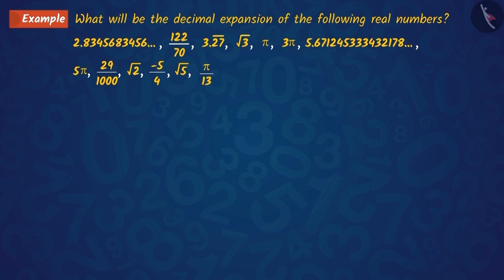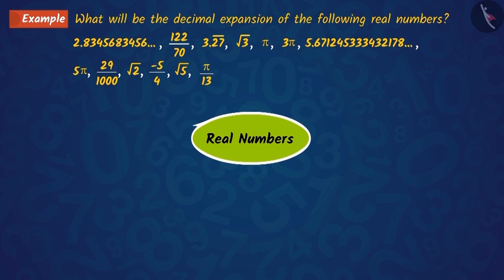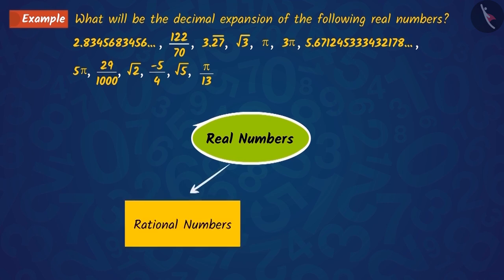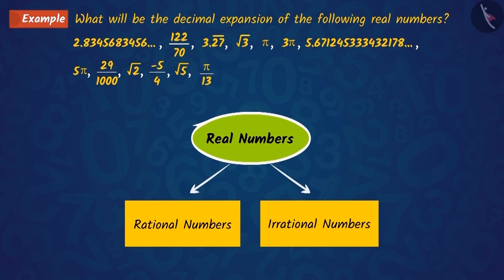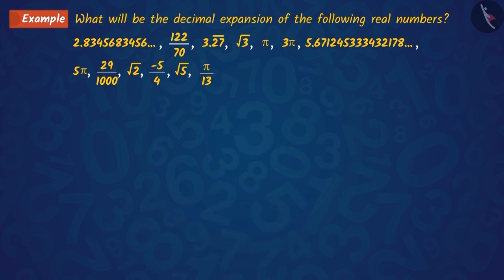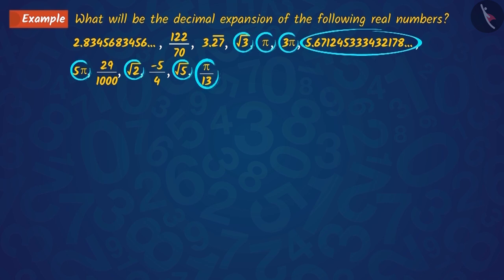What can you tell about these numbers by looking at them? These are all real numbers, and real numbers are a set of rational and irrational numbers. So first, we look at these irrational numbers.